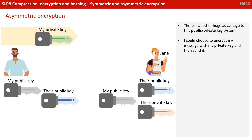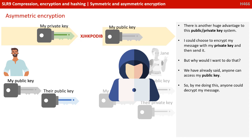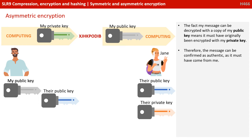Now, there's another huge advantage to this public-private key system. I could choose to encrypt my message with my private key and then send it out. You might be thinking, why on earth would I want to do that? We've already said anyone can access my public key, so presumably anyone can decrypt my message — this seems a little backwards. However, the fact that my message can be decrypted with a copy of my public key means it must have originally been encrypted with my private key. This means the message can be confirmed as authentic — it must have originated from me and not somebody else.